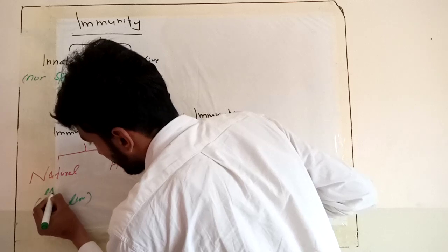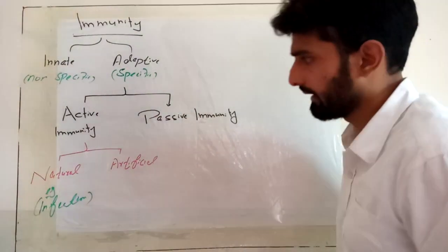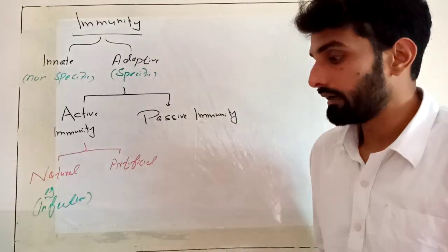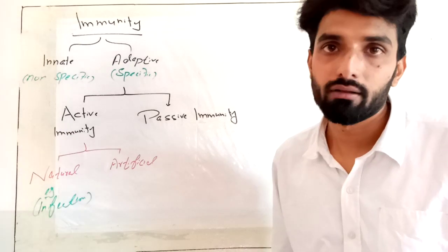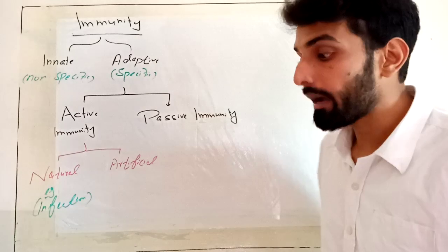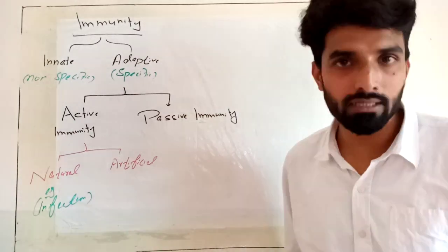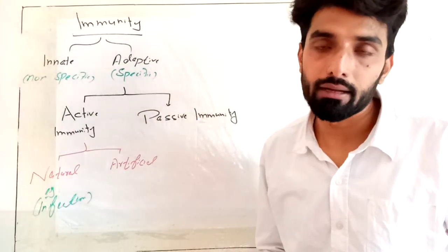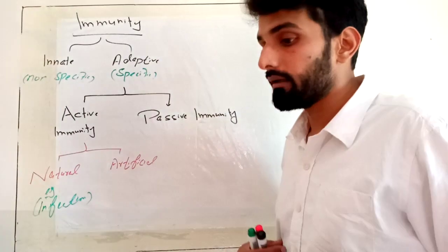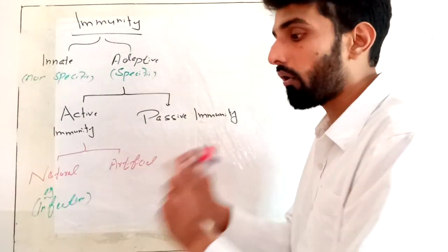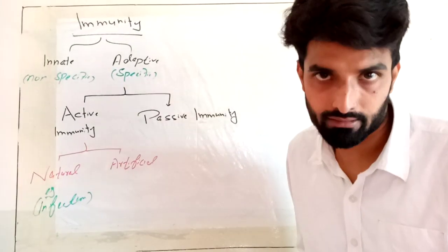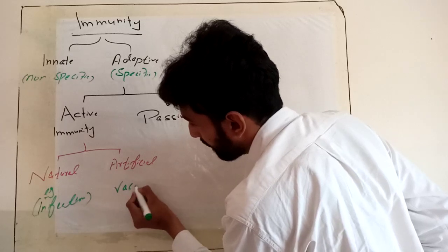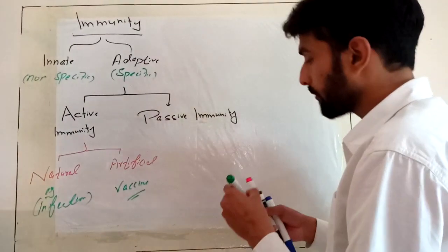Artificial active immunity is a type of immunity in which your immune system is active and making antibodies, but the exposure to the foreign particle was not natural. For example, vaccination — in vaccination, attenuated or weakened germs are injected into your body, and your body starts making antibodies against those weakened or dead particles. Since the germs are injected artificially rather than naturally, this is an example of artificial active immunity.